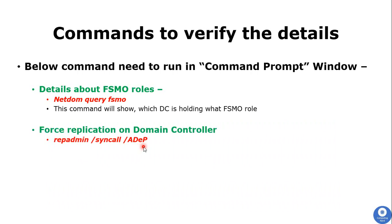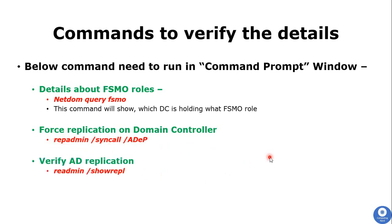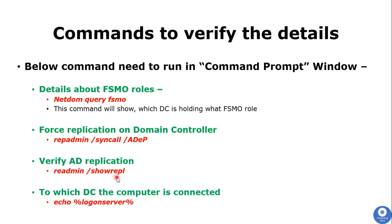The next command is: repadmin /syncall /adeb — this is used to force replication on the domain controller. If you have made changes to Active Directory users, computer objects, or group policy objects and want to replicate those changes immediately across the forest, you run this command. The third command is: repadmin /showrepl — this is used to verify AD replication and check replication status between domain controllers within the forest. You can also run a command to see which domain controller the computer or server is connected to.